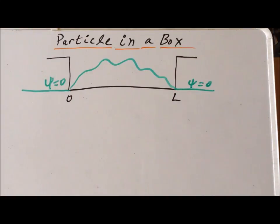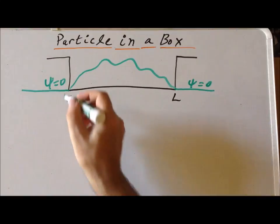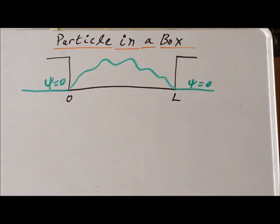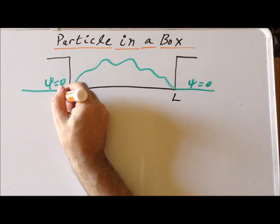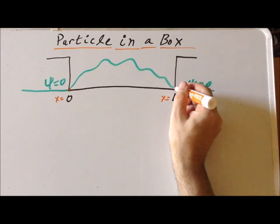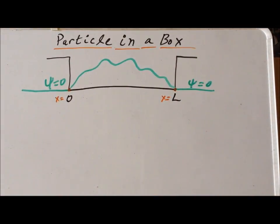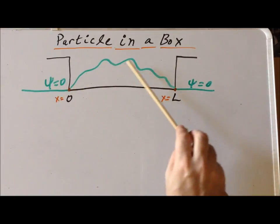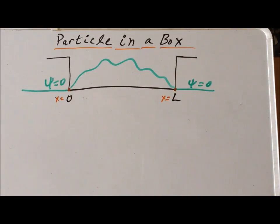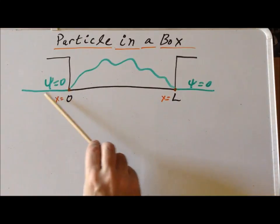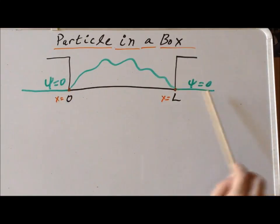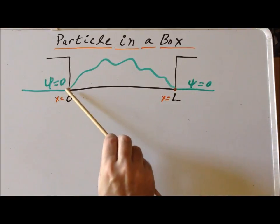How do we know that psi is exactly 0 at the endpoints themselves — at x equals 0 and at x equals L? The reason is that our wave function psi has to be continuous. Not only does it have to be continuous, the first and second derivatives also have to exist. Since the wave function has to be continuous, and we know that just outside the box the wave function equals 0, then the wave function must equal 0 exactly at the endpoints.